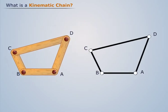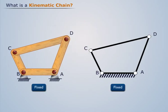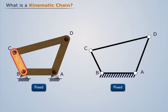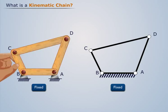Now, if we fix link AB and impart motion to link BC, we see that this arrangement moves in a definite path such that link CD and AD oscillate.